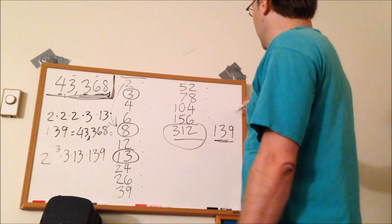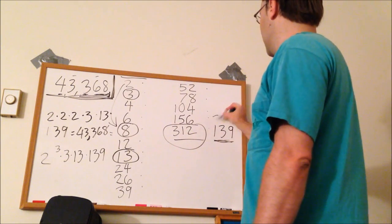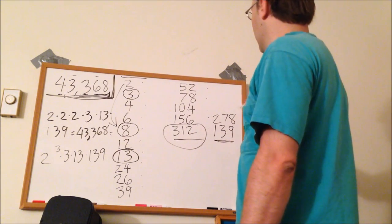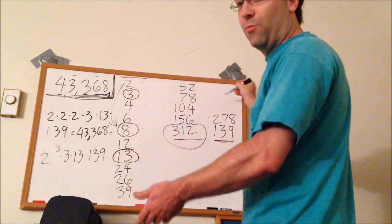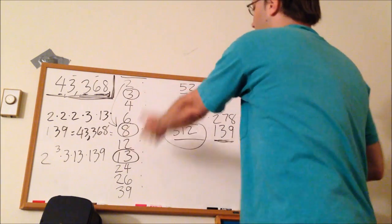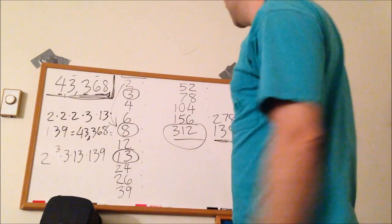This is a comma. Not 43.368. So you could also write that as 2 cubed times 3 times 13 times 139. That's the prime factorization of that. You could figure all these out just by using Excel, using a calculator, whatever.